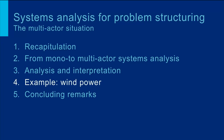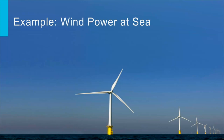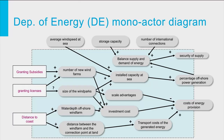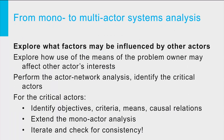Let us now look at our wind power example again. Our problem owner is the Department of Energy. It wants to enlarge the percentage of offshore power generation while not endangering security of supply and while keeping power costs at acceptable levels. Remember the system diagram for the mono-actor perspective explained in the first tutorial on systems analysis. Using this diagram, our first question is: what factors may be influenced by other actors, and who are these actors?